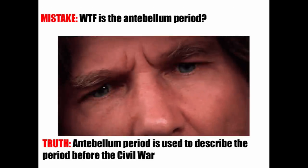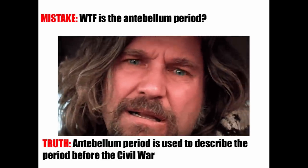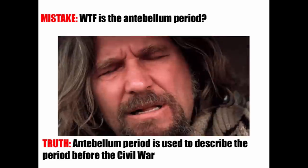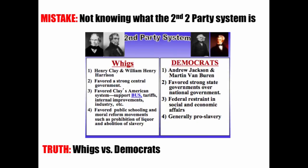Students are often confused about the antebellum period — all it is is the term used to describe the period before the Civil War, roughly from the 1820s with no official start date up until the Civil War. Also, a lot of students don't know about the second two-party system: the Whigs versus the Democrats. The Whigs were beefing with Andrew Jackson over the bank and other issues. So: first two-party system — Federalists versus Democratic-Republicans; second two-party system — Whigs versus Democrats in the 1830s–40s.